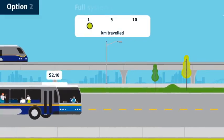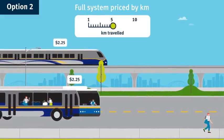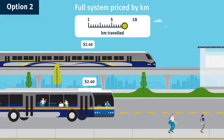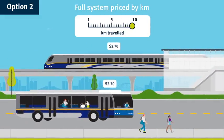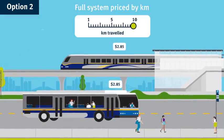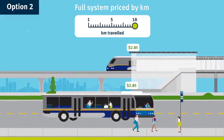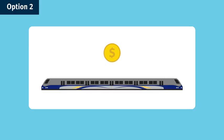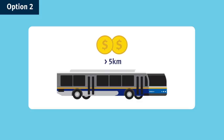In option two, fares would be based on kilometres travelled for both bus and rapid transit. This means predicting your bus fare isn't as easy, but all fares on both bus and rapid transit would more accurately reflect the distance you travel. Under this structure, fares for long SkyTrain trips that don't cross a zone boundary would increase, as would fares for bus trips longer than five kilometres.